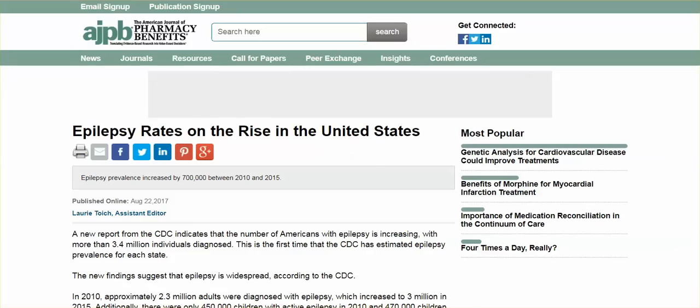Epilepsy rates on the rise in the United States. A new report from the CDC indicates that the number of Americans with epilepsy is increasing, with more than 3.4 million individuals diagnosed. And that is the date, August 2017. What's going on? Why is the diagnosis of epilepsy increasing?